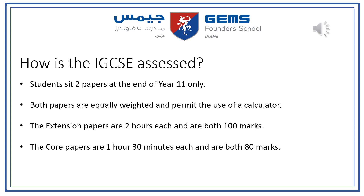For both the core and extension tiers, students will sit two papers at the end of year 11. Both papers are equally weighted and permit the use of a calculator. The extension papers are two hours each and are both worth 100 marks, while the core papers are one hour thirty minutes each and are worth 80 marks.